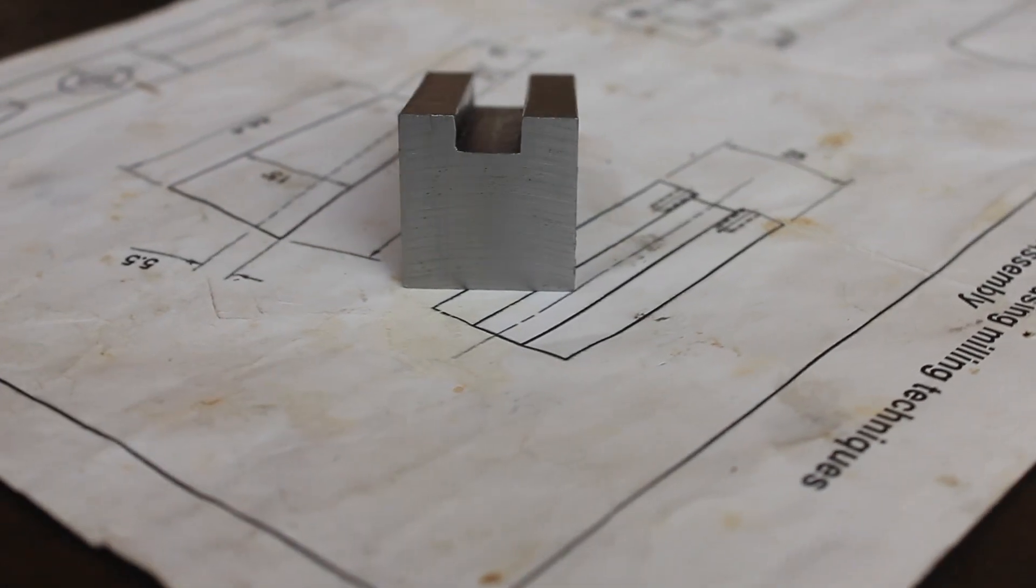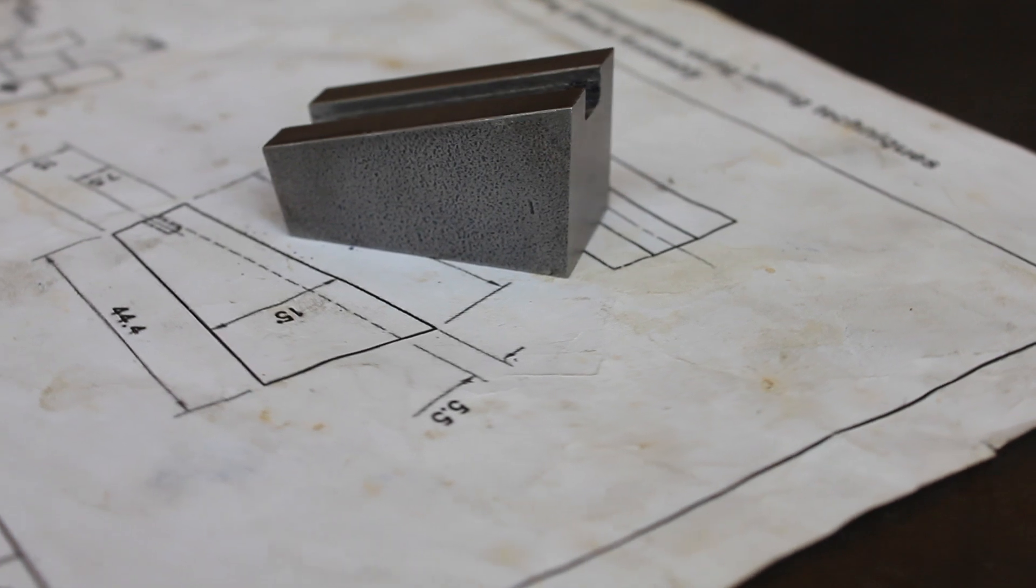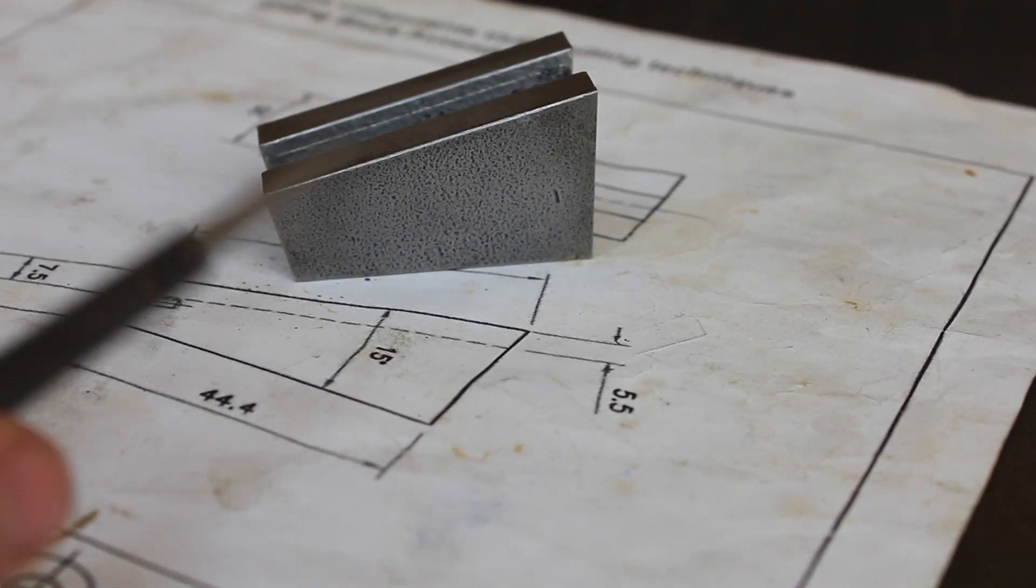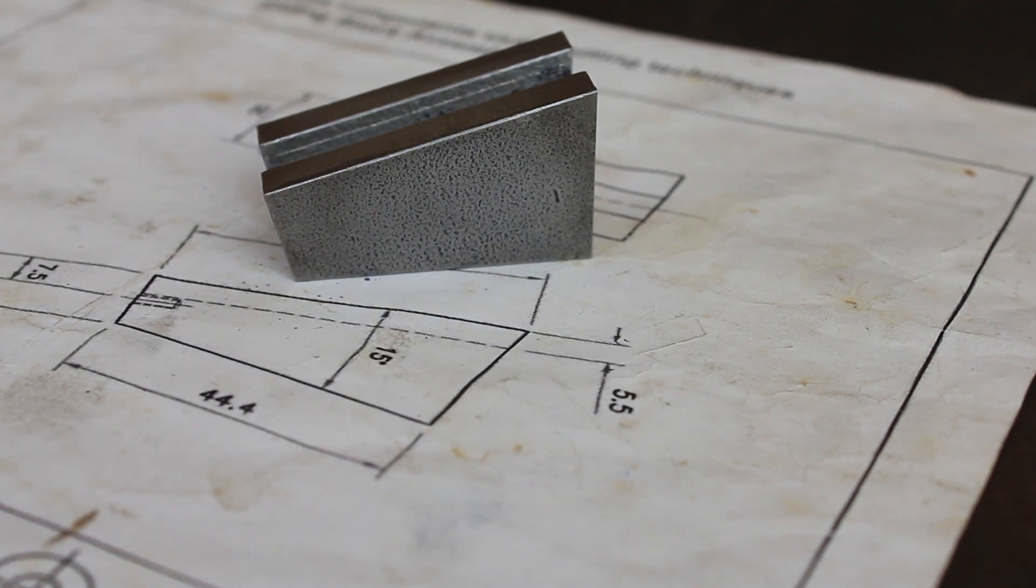This is 5 Minute Friday number 3, and today we're going to be measuring and inspecting angles using a sine bar. This is part of the sliding block assembly which has a critical angle of 15 degrees on this taper here, so we need to inspect this edge to check that it falls within our 0.15 degree tolerance.